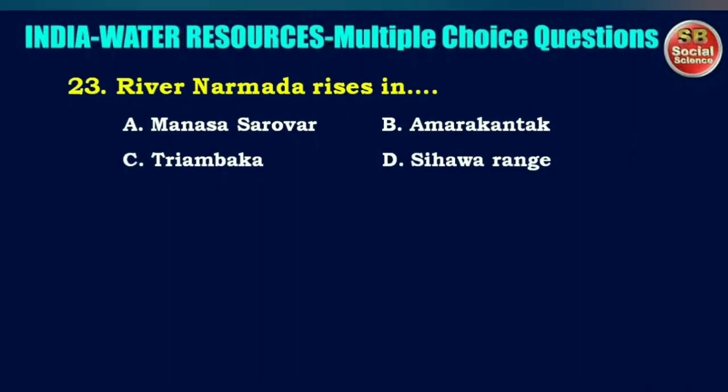River Narmada rises in — options are Manasa Sarovar, Amarkantak, Triambaka, or Sihavar Range. The right answer is option B: Amarkantak.